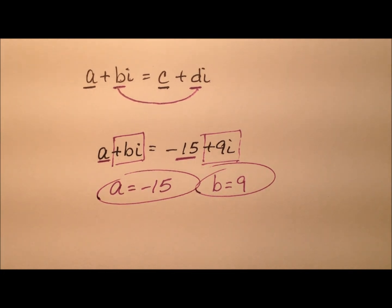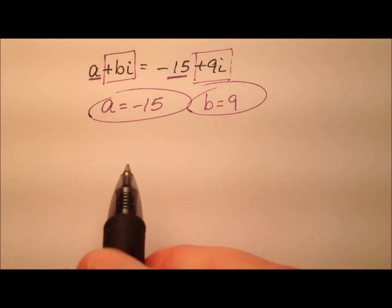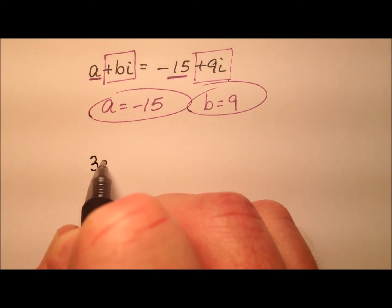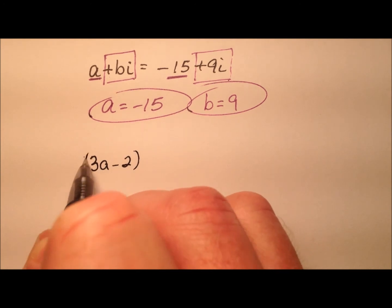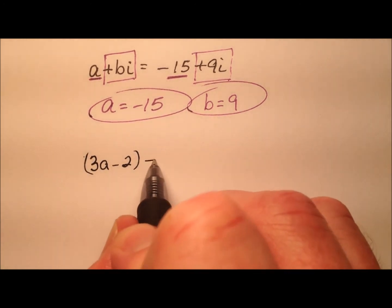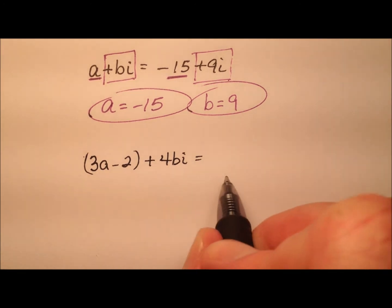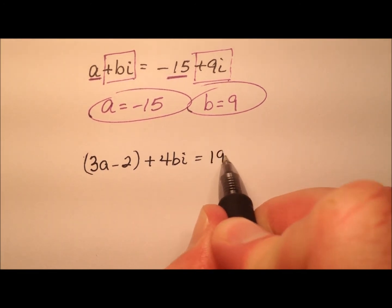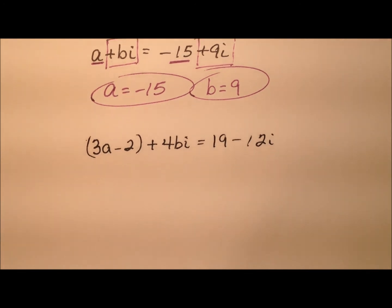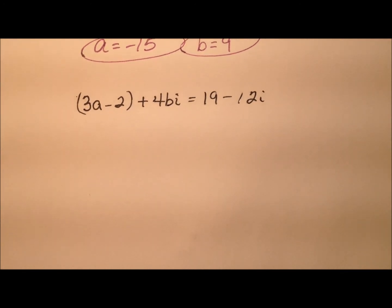The second example, slide up here a little bit, is going to be 3a minus 2, put that in parentheses, plus 4bi. And we're going to say that equals 19 minus 12i. Okay? So let's figure out which parts are the real parts and which parts are the imaginary parts.